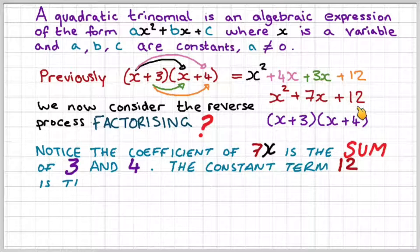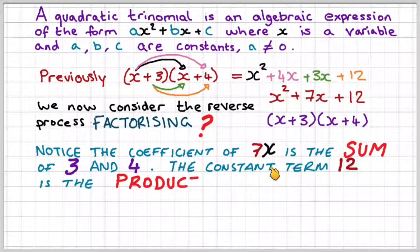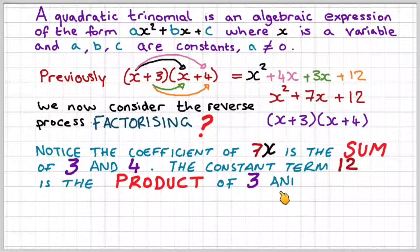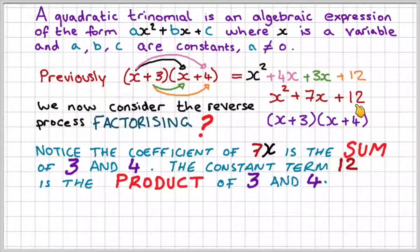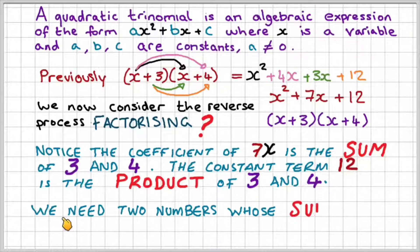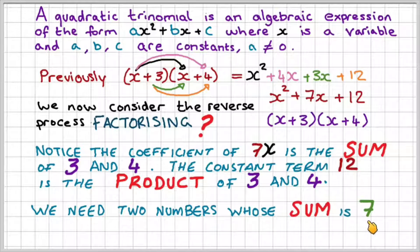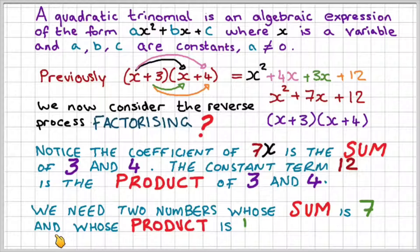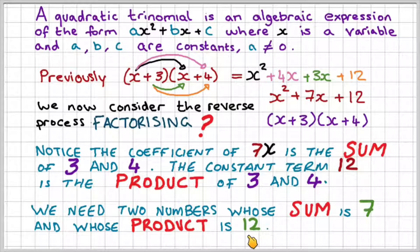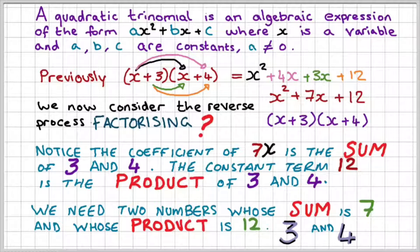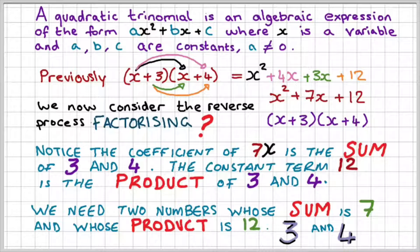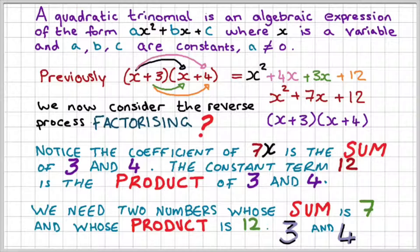The constant term, 12, is the product of 3 and 4. So 3 times 4 gives us 12 and 3 plus 4 gives us 7. We need two numbers whose sum is 7 and product is 12. Those numbers are 3 and 4. This is commonly referred to as the product sum method.